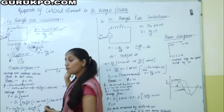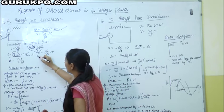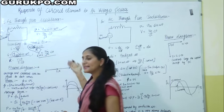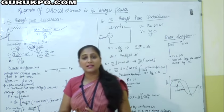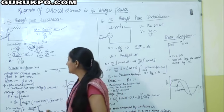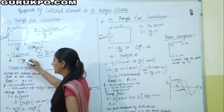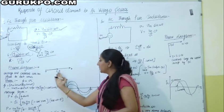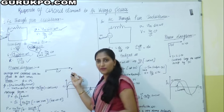The RMS value of current is Im / √2. There is no phase angle between current and voltage — they are in the same phase. We can write R = V/I. The phasor diagram shows both I and V are in the same phase.